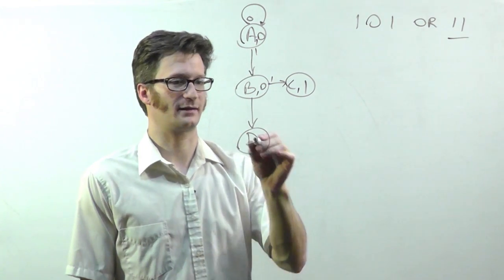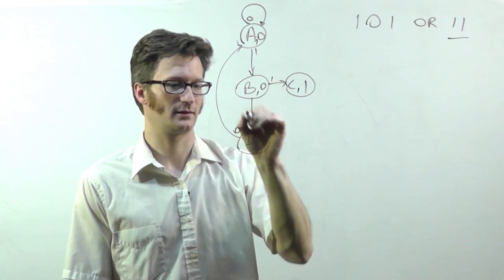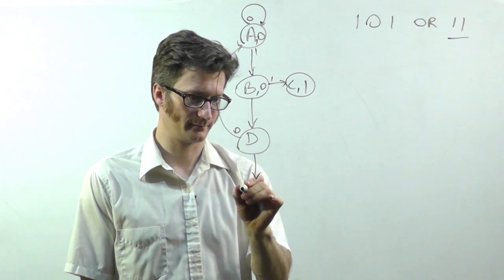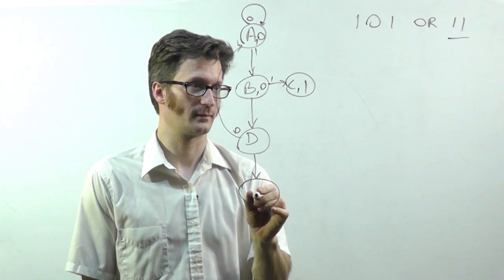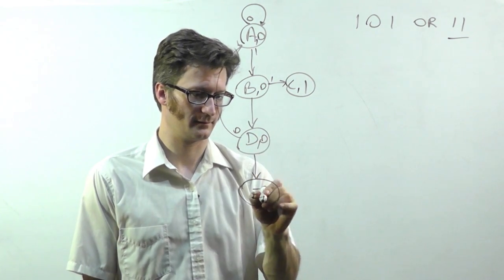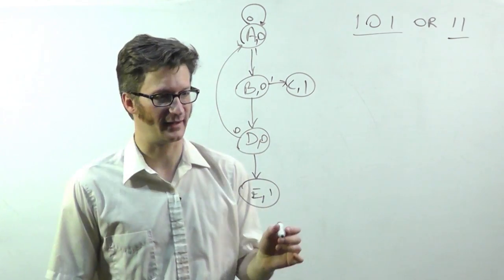From state D, if I detect a 0, I'm going to jump back to here. And if I detect a 1, I'm going to go to E, and I'm outputting a 1 because I've detected that.